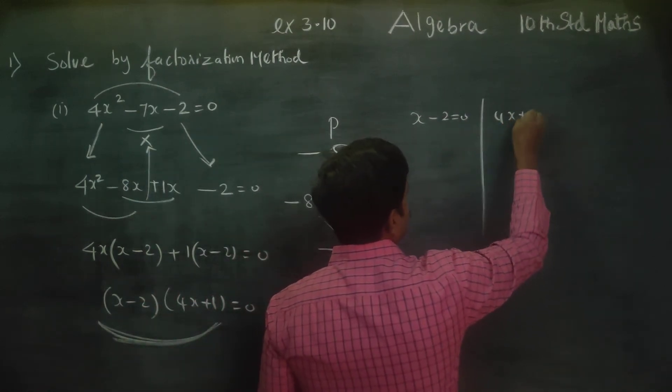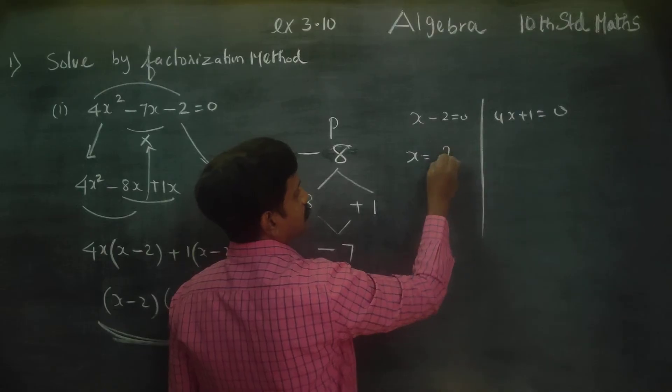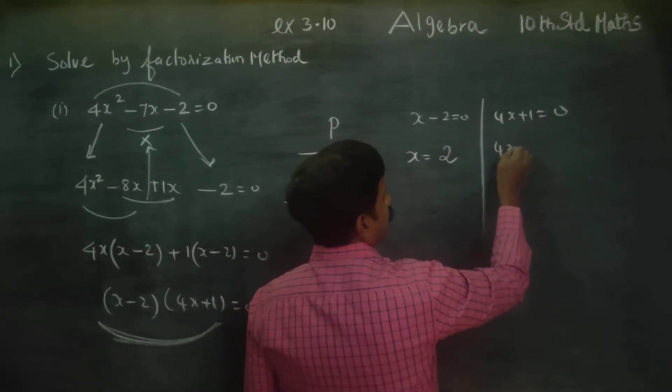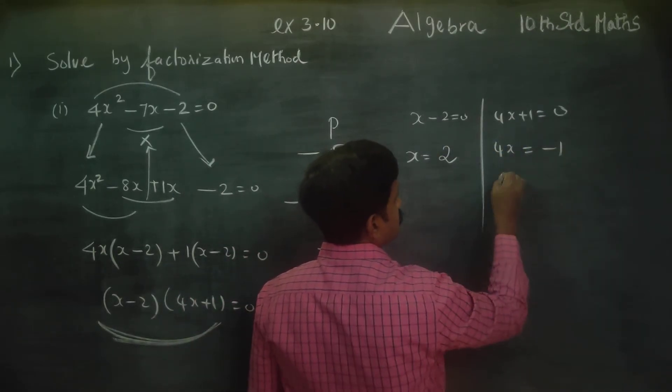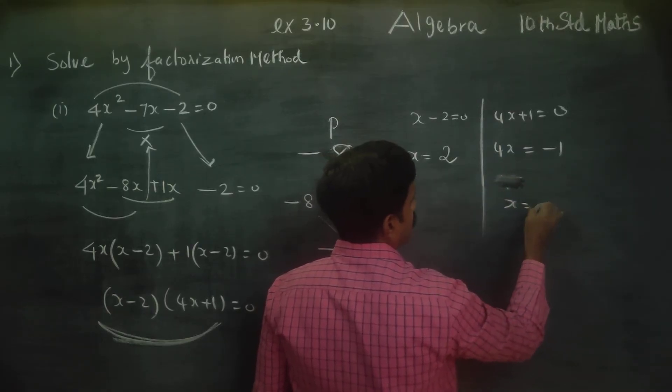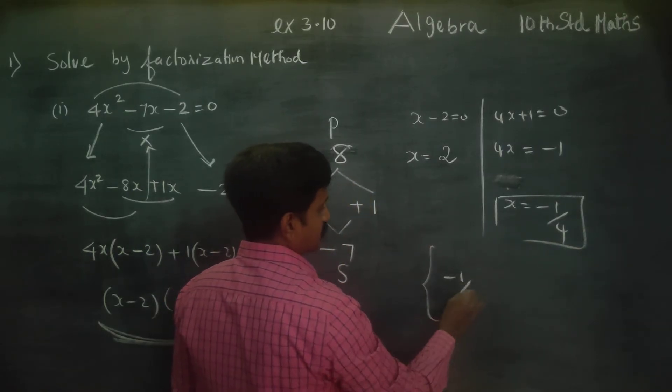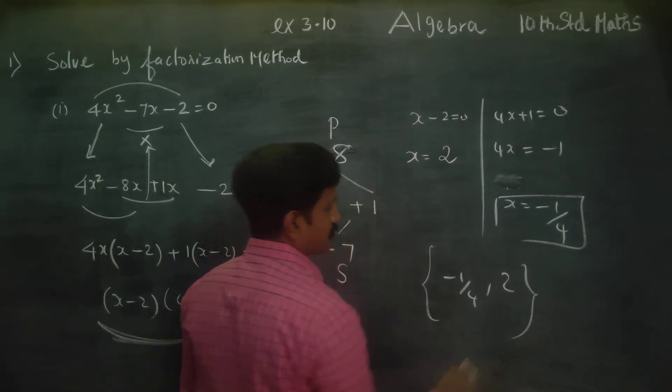4x plus 1 is equal to 0. x is equal to 2. 4x plus 1, then minus 1. 4x is equal to, sorry, x is equal to minus 1 by 4. Therefore my solution set is minus 1 by 4 and 2. This is my final answer.